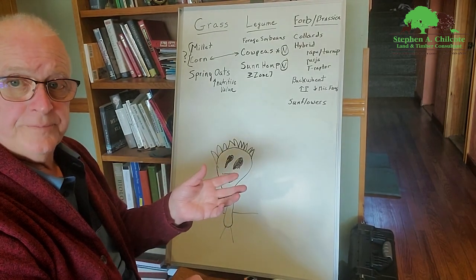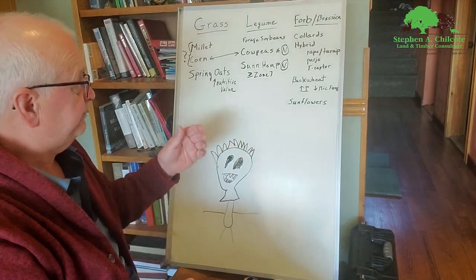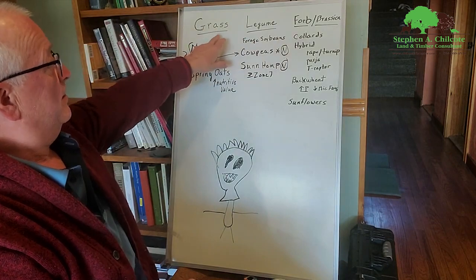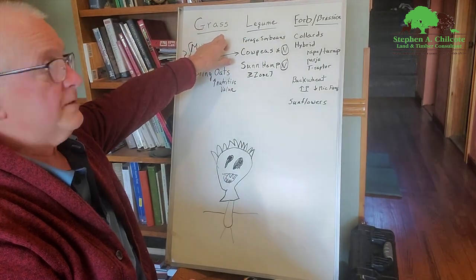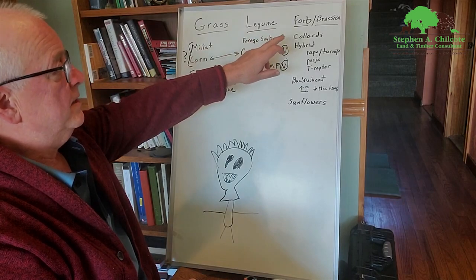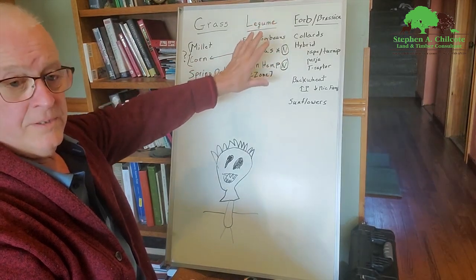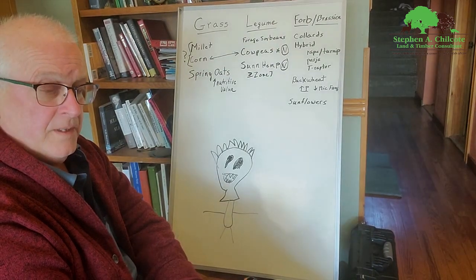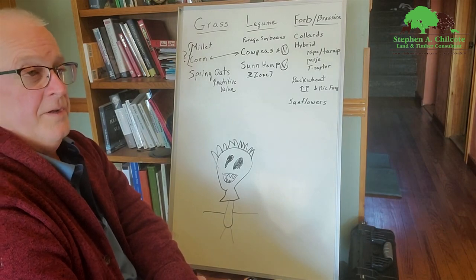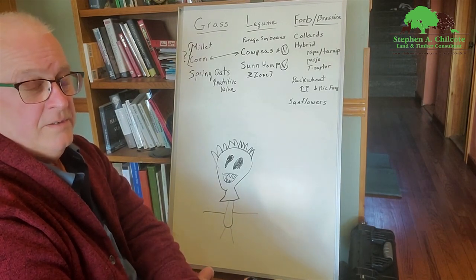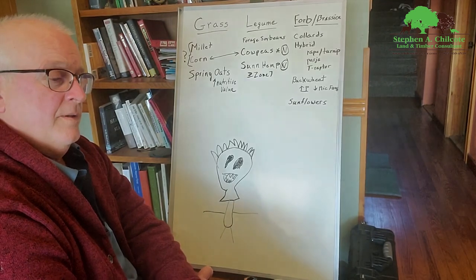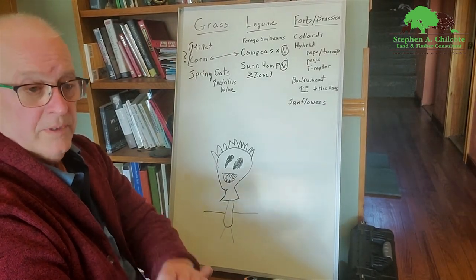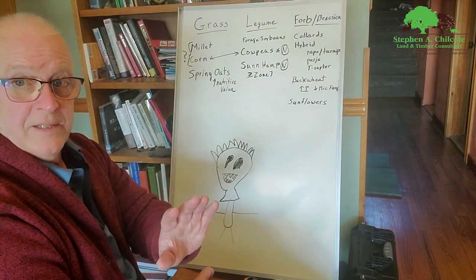The only way you can achieve that is to feed those little critters, all that mycorrhizal fungi, rhizobia, azotobacter bacteria. The way to feed those guys is to have lots of roots, different sized roots. So we want to have grasses, legumes, forbs, and brassicas all in the same mixture.